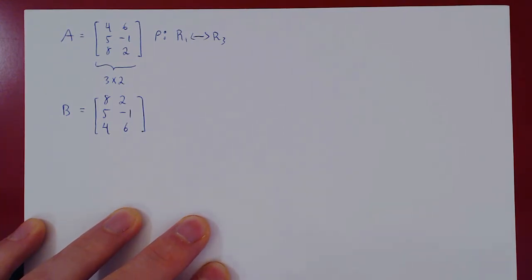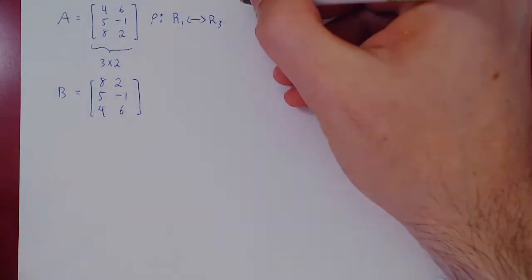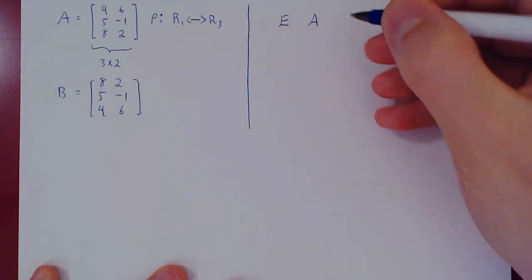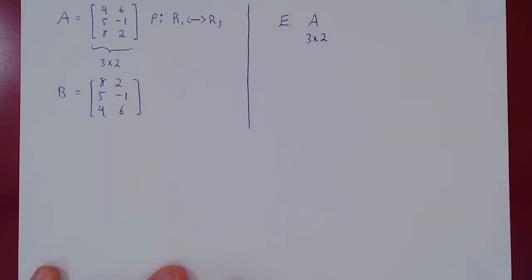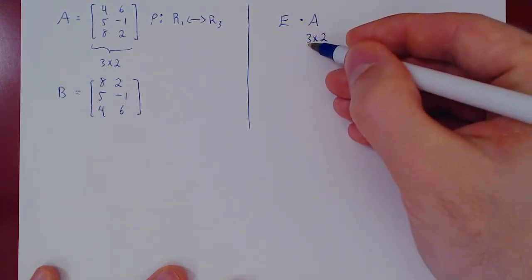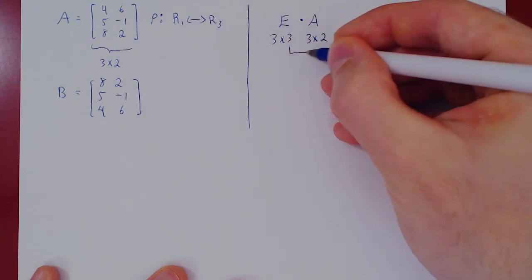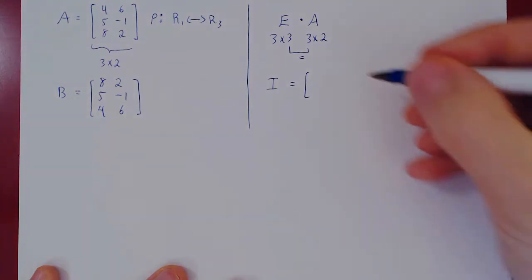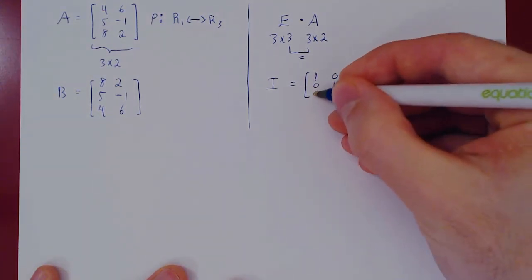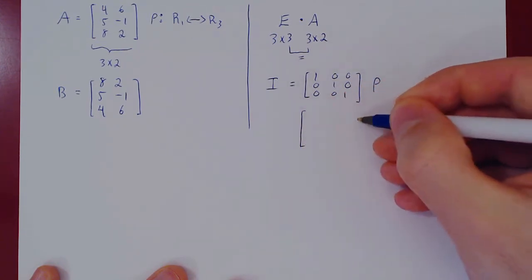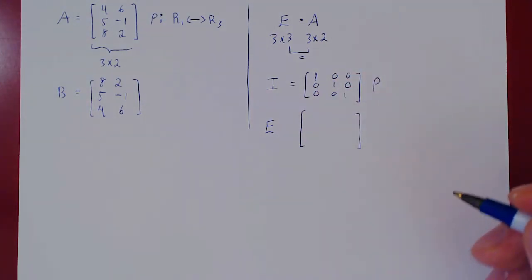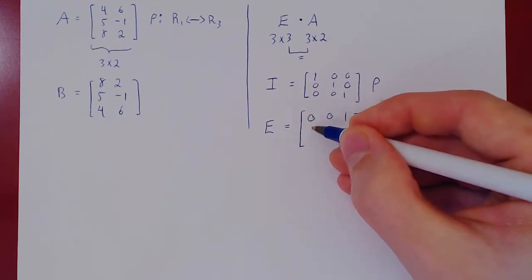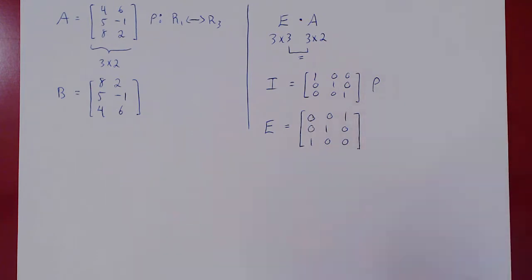Let's now construct B in a different way. What is the size of I? We want to compute E times A, and A is a 3 by 2 matrix. E will be the same size as I. To have a defined multiplication, E must be 3 by 3, so I is the 3 by 3 identity matrix. We apply the row operation — swapping row 1 with row 3 — to get E: row 1 becomes 0, 0, 1; row 2 stays 0, 1, 0; row 3 becomes 1, 0, 0. That's E.